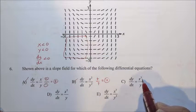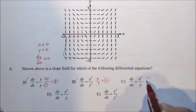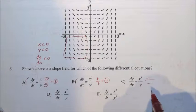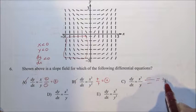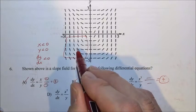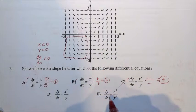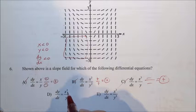If we go to C, x is negative. A negative cubed is a negative. Y is negative. A negative divided by a negative is a positive. But we see negative slopes, so C is out.